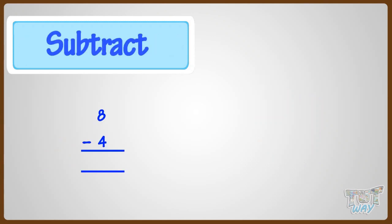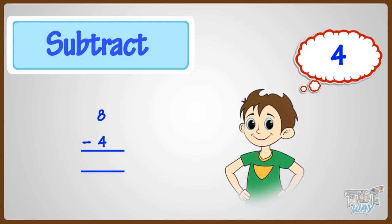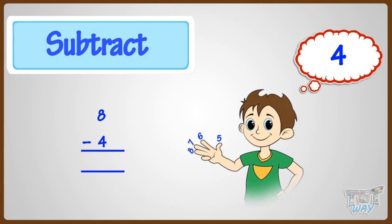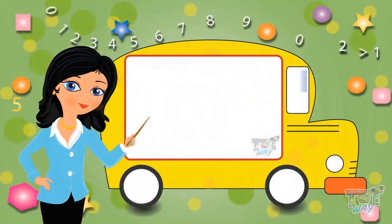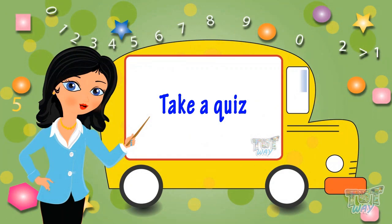Good. So kids, what have we learned? We have learned how to subtract. Keep the smaller number in your head and count up to the bigger number on your fingers, and the number of fingers is your answer. Now you may go ahead and take a quiz to see what you have learned. Bye-bye!